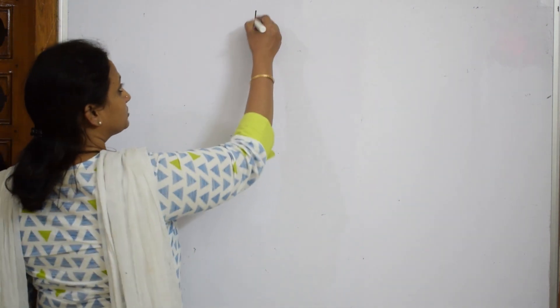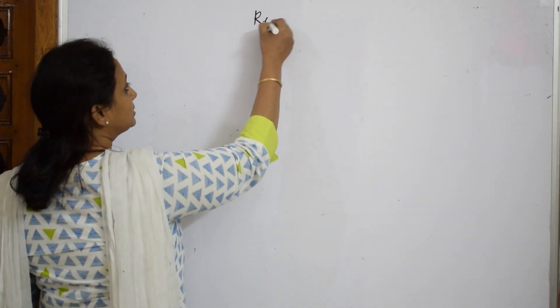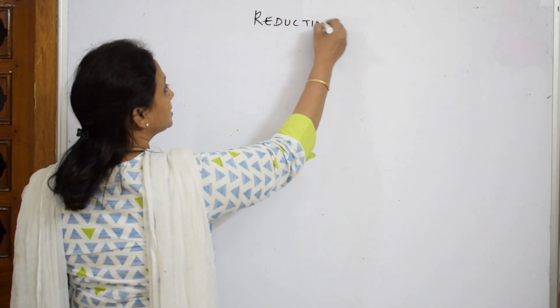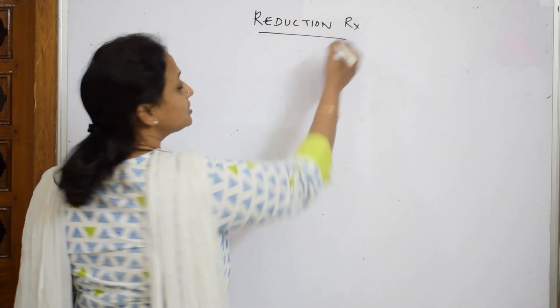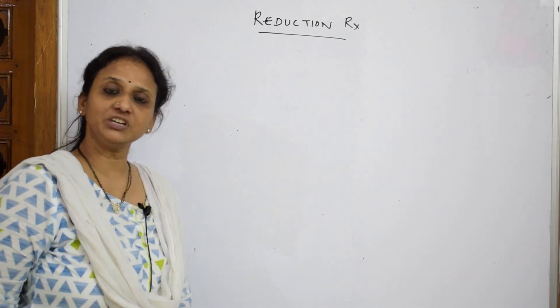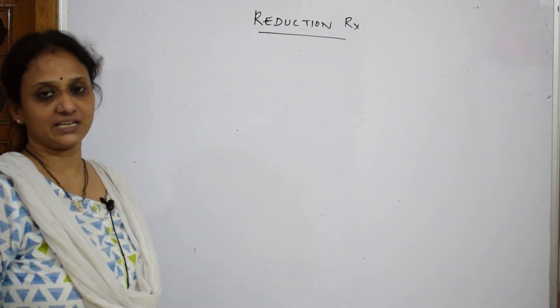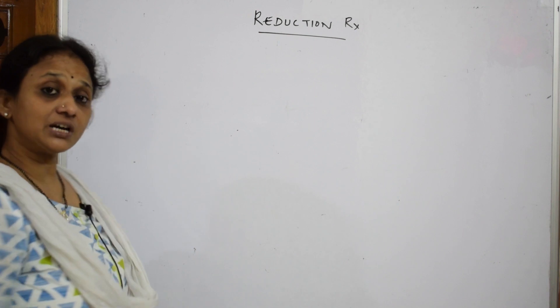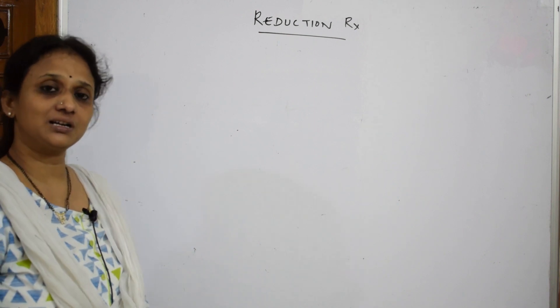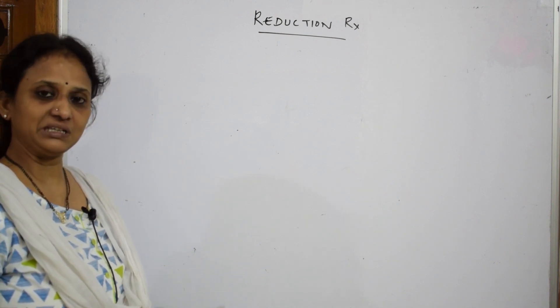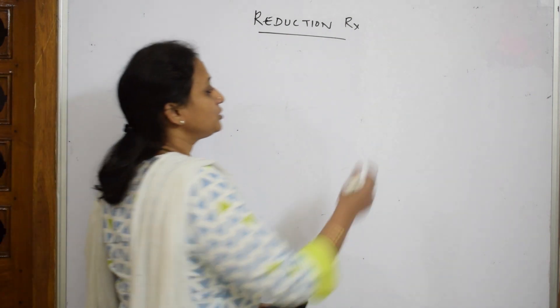We are going to learn the reduction reactions now. In reduction reactions, we very well know we require the presence of reducing agents. The reducing agents we have already studied are platinum, palladium, and nickel.